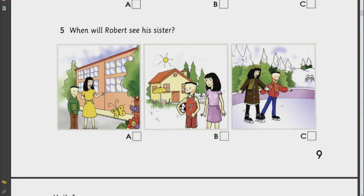Five. When will Robert see his sister? When are you going to see your sister? Well. I saw her last spring when I visited her flat. Then she came home to my parents' house for the summer holiday. Are you going to see her again soon? Yes. I'll see her in January. If the weather's cold, we might go ice skating.